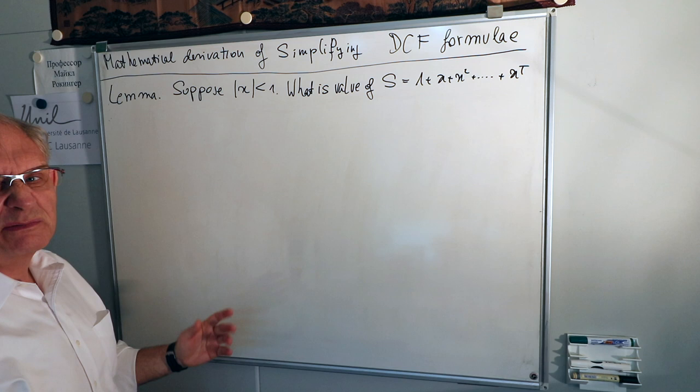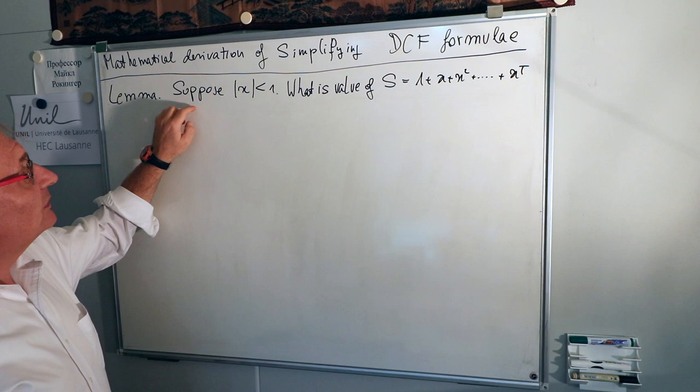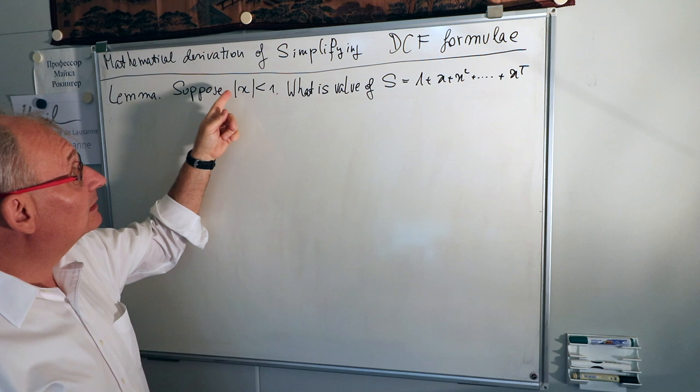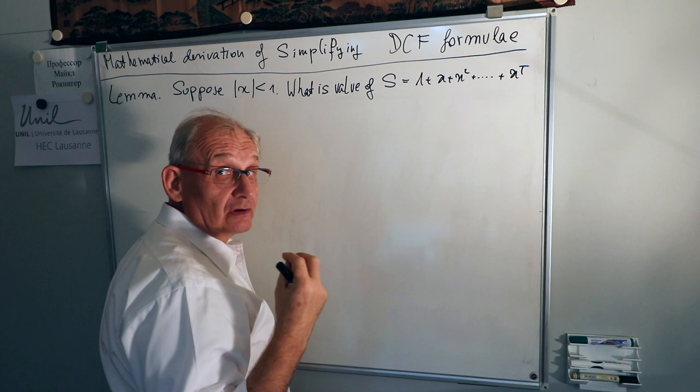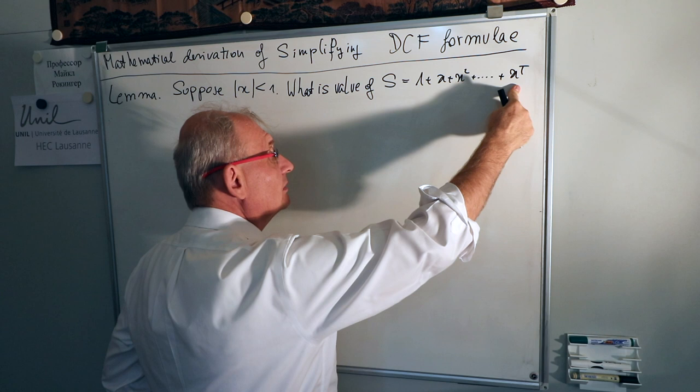It's really simple — you don't want to call this a proposition or theorem, it's elementary. Suppose that x is going to be finite and smaller than 1 in absolute value, so any value between minus 1 and 1 is okay. The question is: what is the value of S? We take a sequence with a geometric progression where the term is x, so 1 plus x plus x squared up to the last term x to the power t.